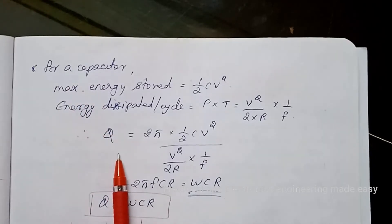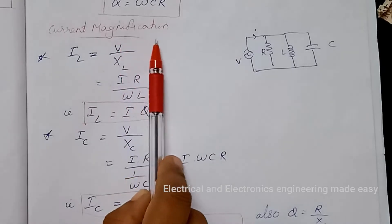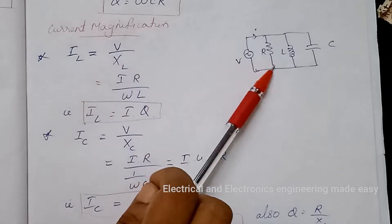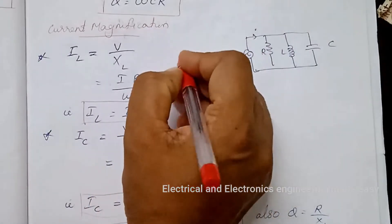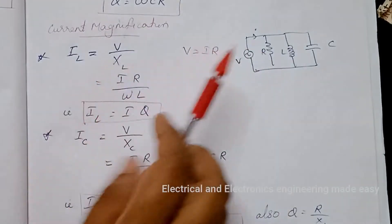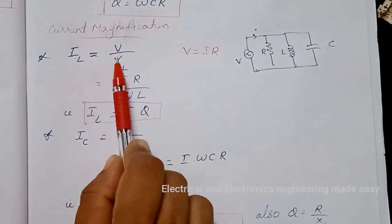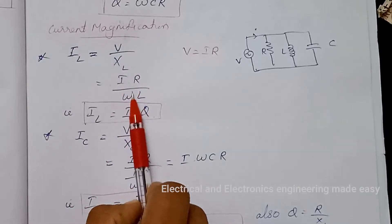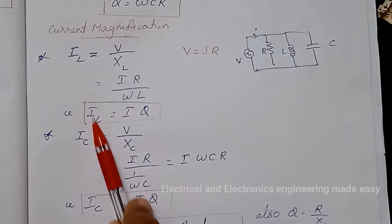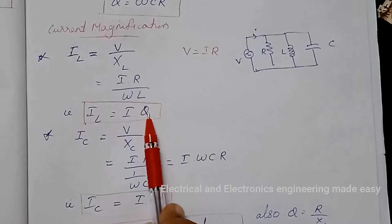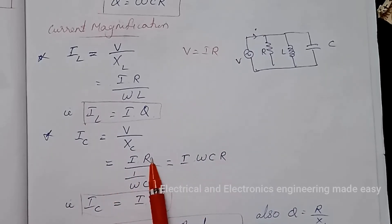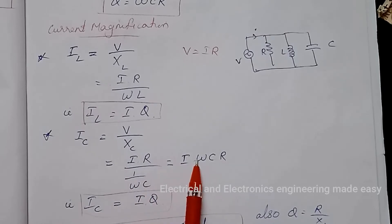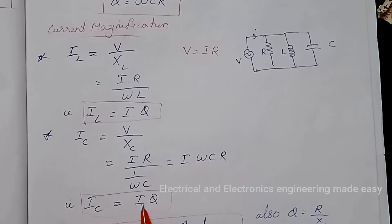Next is current magnification, which occurs in a parallel resonant circuit. The voltage applied to the parallel circuit is V equals I times R. The inductor current I_L equals V by XL equals I times R divided by omega·L, or I_L equals I times R by omega·L, which is the Q factor. Also, I_C equals V by XC, that is I times R divided by 1 by omega·C, equals I times omega·C·R, so I_C equals I times Q.